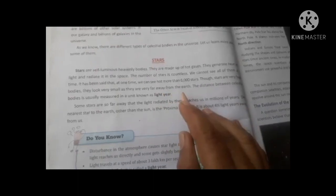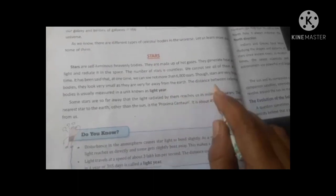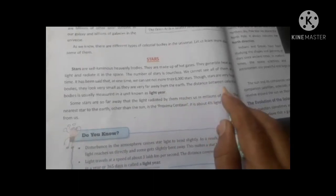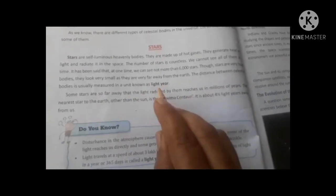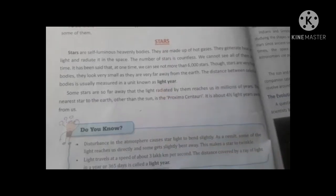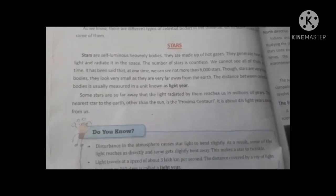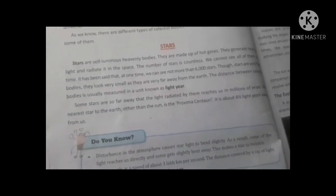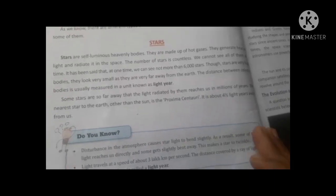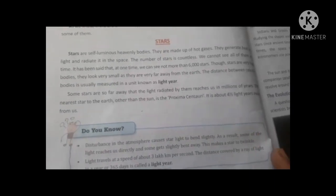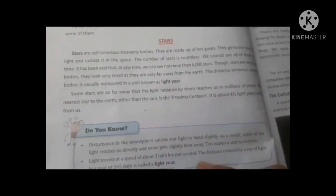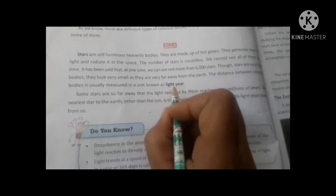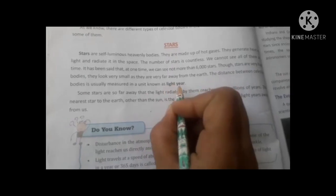The distance between celestial bodies is usually measured in a unit known as light year. If we measure something, we use centimeters or kilometers, but the distance between Earth and celestial bodies in space is measured in the unit of light year.